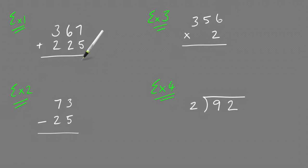So 7 plus 5 is 12. Put down the 2 and carry the 1. 2 plus 6 plus 1 is 9, and then 3 plus 2 is 5. So 367 plus 225 equals 592.